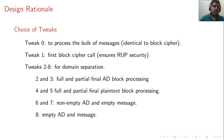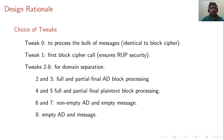On the choice of tweaks: tweak 0 processes the bulk of messages (identical to a plain block cipher call as we'll see). Tweak 1 encrypts the nonce, ensuring RUP security since it is not used anywhere else. Tweaks 2 and 3 handle full and partial final AD blocks; 4 and 5 handle full and partial final plaintext blocks; 6 and 7 are used for non-empty AD with empty message; and 8 is used for both empty AD and empty message.